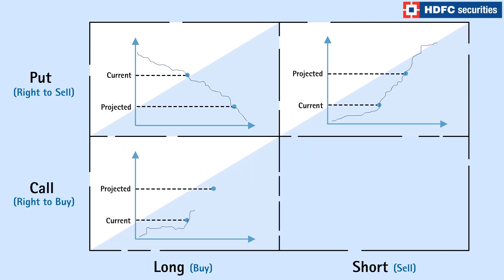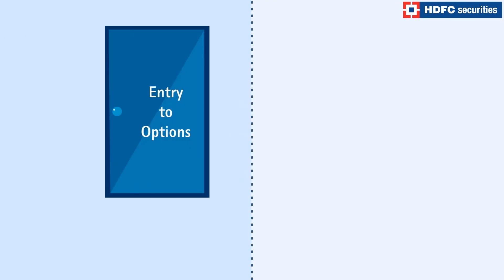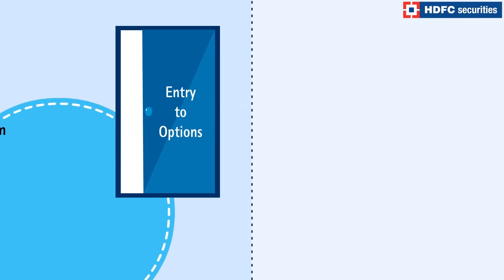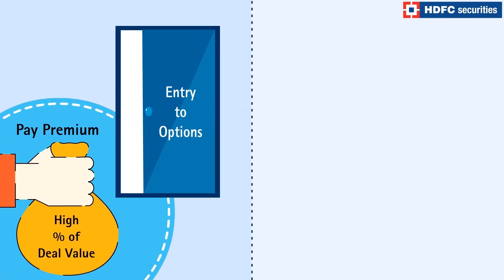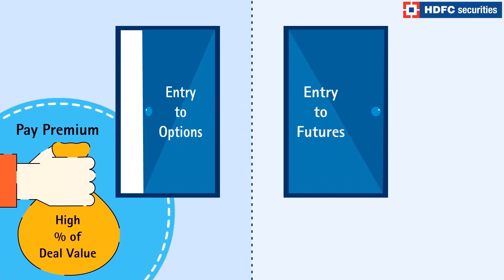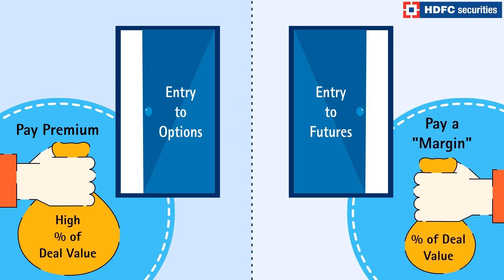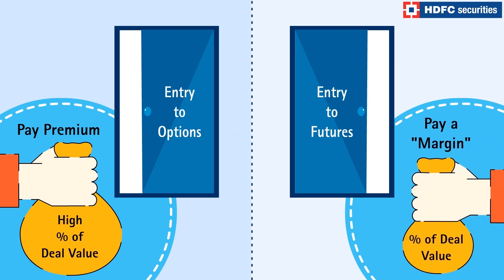To participate in options, one has to pay a premium for the right to the end result. With a futures contract, you pay or receive a small down payment towards the end result.